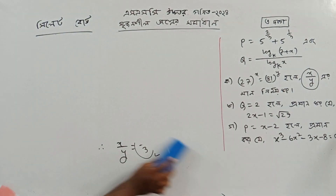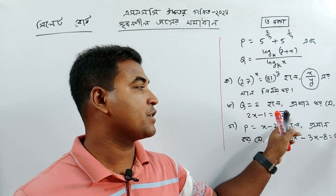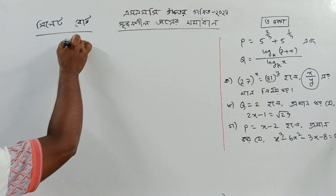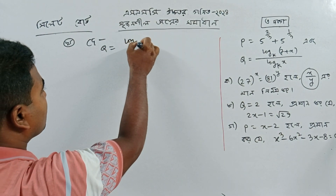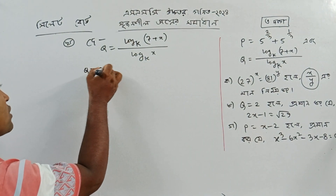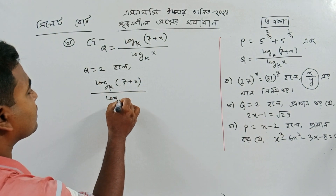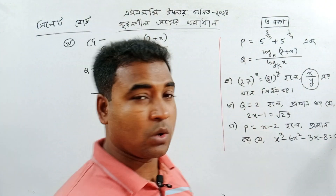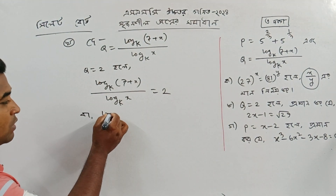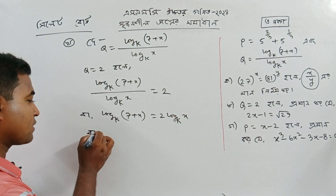Now for the second problem: we have 2x minus 1 equals root of 29. And q equals log k base 7 plus x divided by log k base x, where q is equal to 2. So log k base 7 plus x divided by log k base x equals 2, which means log k base 7 plus x equals 2 times log k base x.